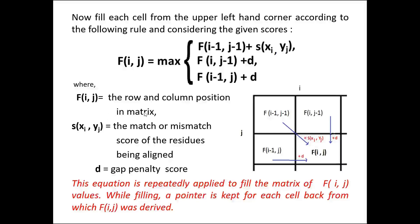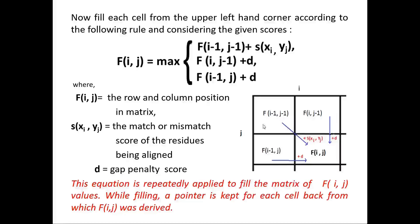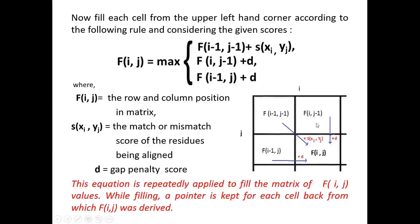Fij is the row and column position in the matrix. The score of Xi and Yj is the match or mismatch score of the residues being aligned, and D is the gap penalty score. As per the formula, the value from the diagonal box is added with the score of the residues being aligned — either a match score or a mismatch score. For the boxes to the left and above, a gap penalty is added. The maximum value obtained becomes the value of that box, and a pointer is placed indicating from which box the value is derived. This equation is repeatedly applied to fill all cells.